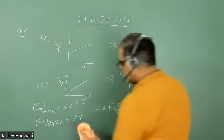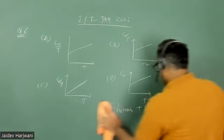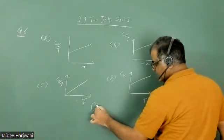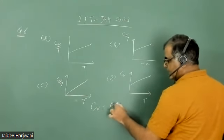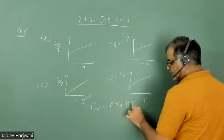So the expression for specific heat of a two-dimensional solid becomes CV = AT + BT².